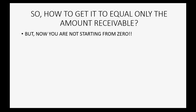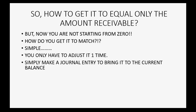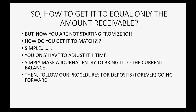But now, let's assume you're not starting from zero — you've been recording things and then you watched this video series to learn how to do it correctly. So what if you're not starting from zero and you have the amount that we have now? How do you get it to match? Very simple — you only have to adjust it one time. If you make a simple journal entry to bring it to the current balance, then all you have to do is follow our procedures for deposits going forward.